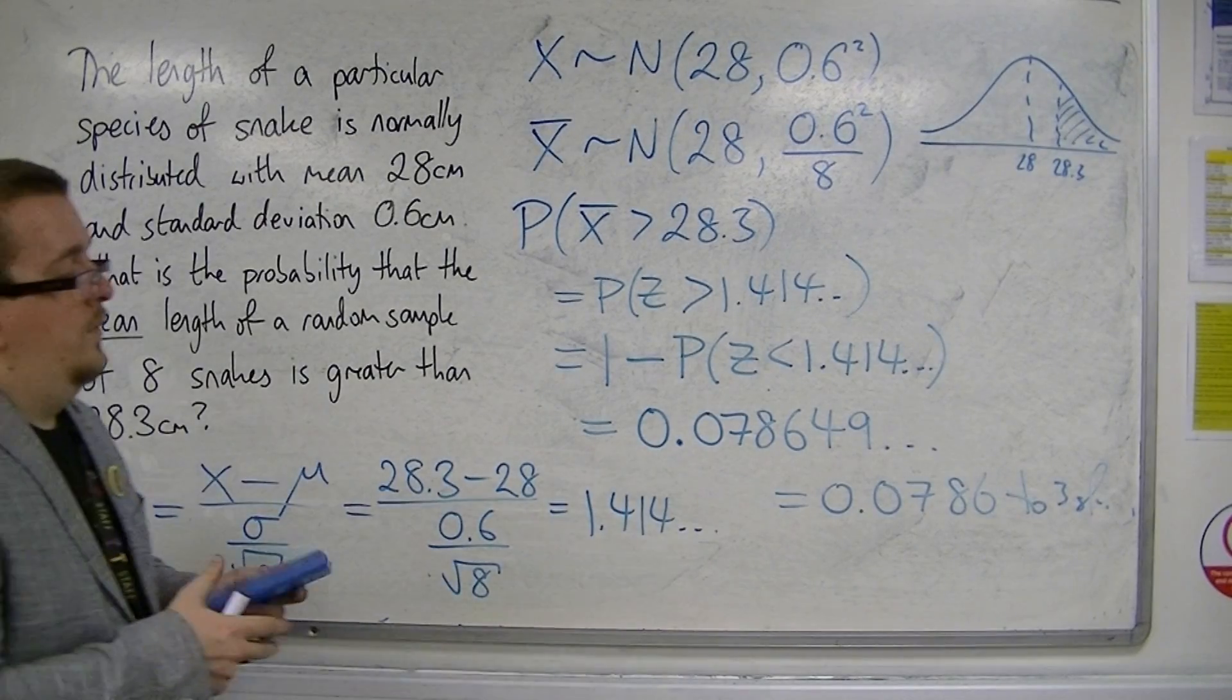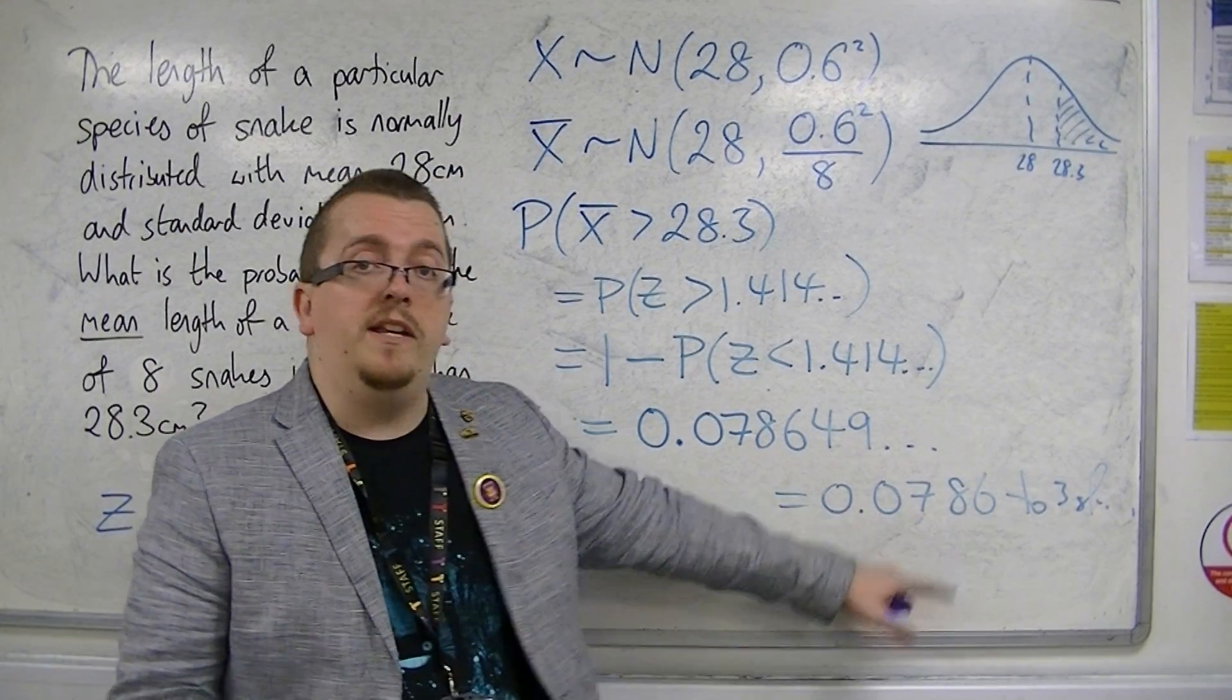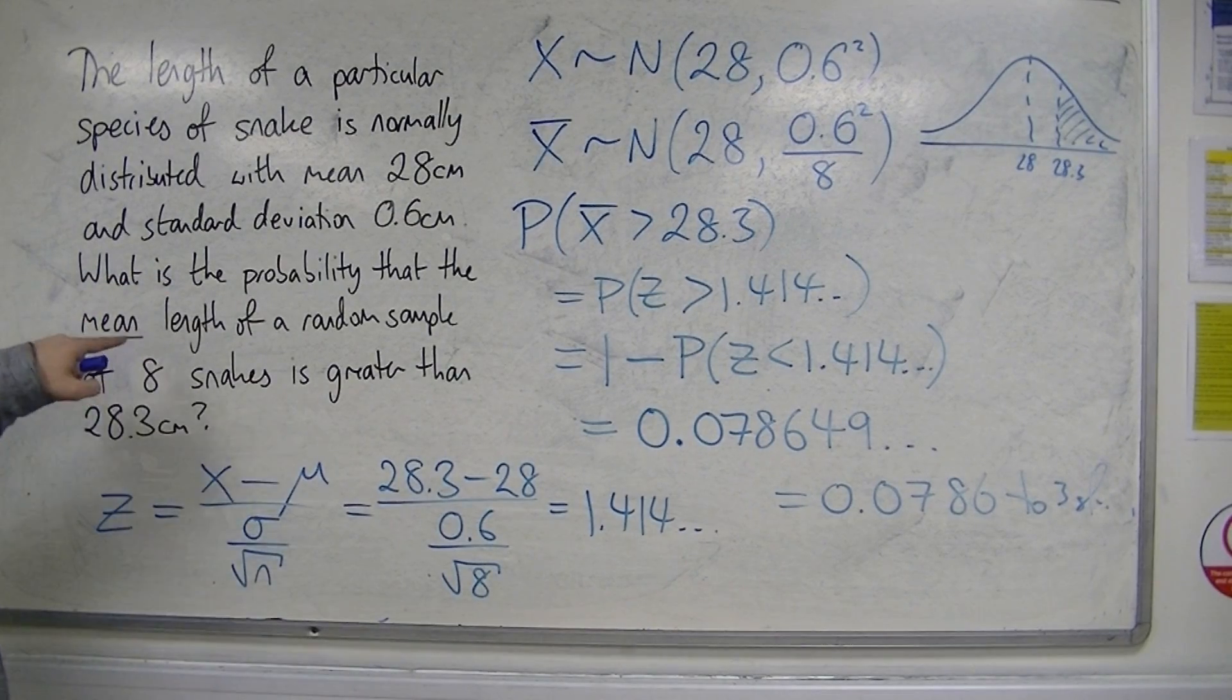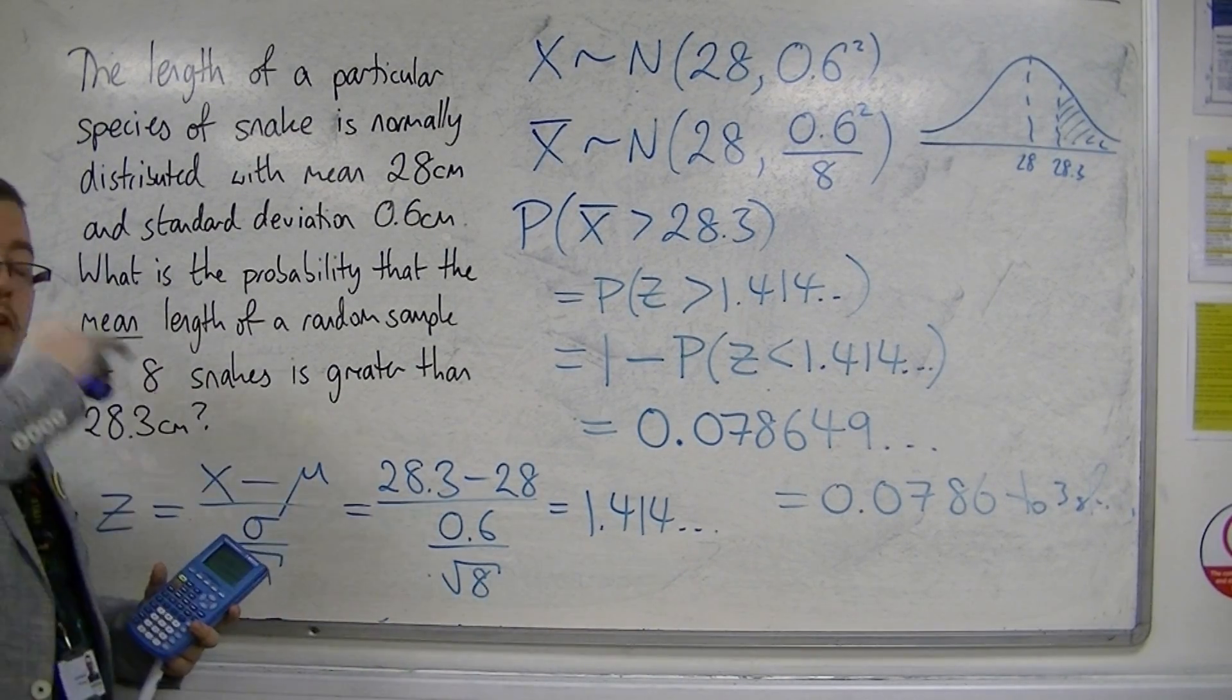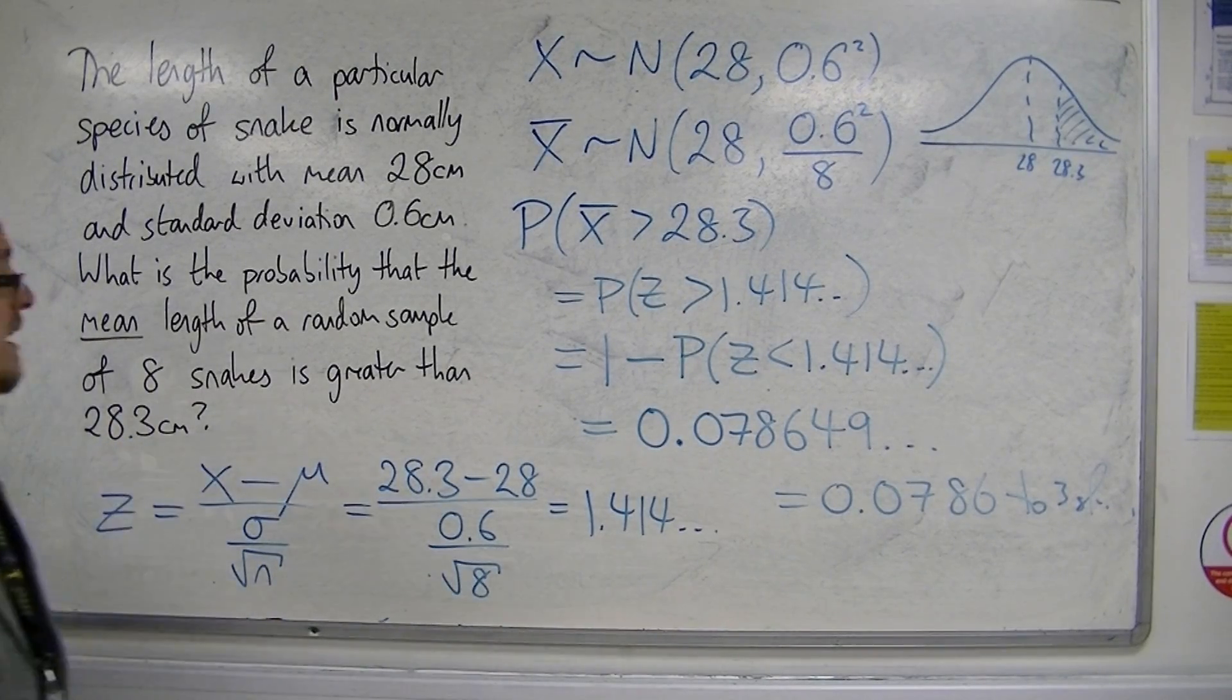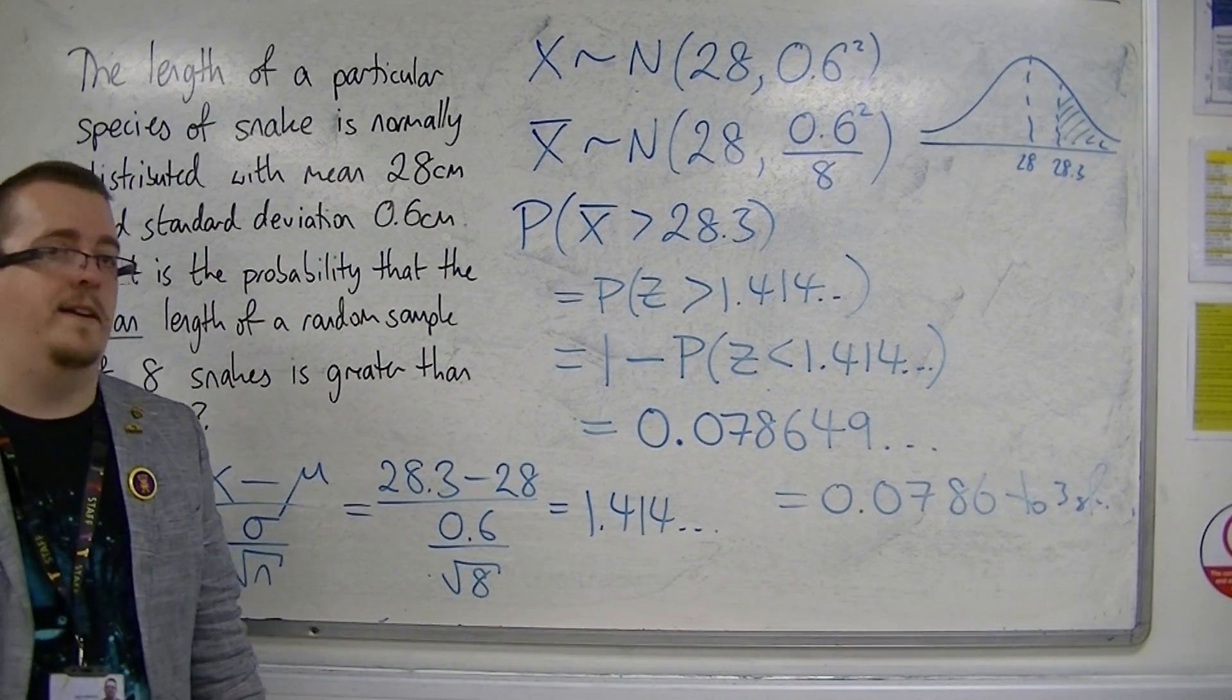So 7.9% I would expect to see in this case. The probability that the mean length of a random sample of 8 snakes—I take 8 snakes, I find the mean—the probability that their mean is greater than 28.3 is that probability there. So quite unlikely.